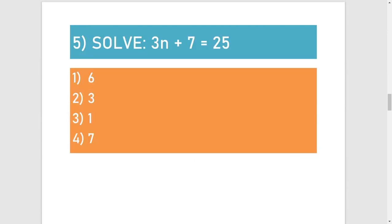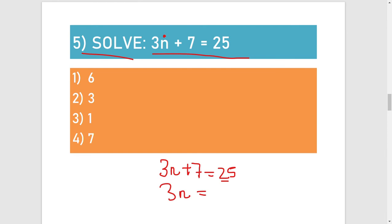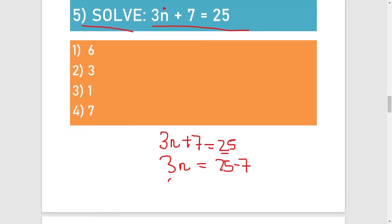The fifth question: solve for n in 3n + 7 = 25. We write 3n + 7 = 25. Moving 7 to the right-hand side, it is subtracted: 3n = 25 − 7 = 18. Then moving 3 to the right-hand side, it divides: n = 18 ÷ 3 = 6. Option number 1 is the right answer.